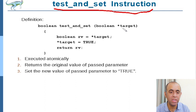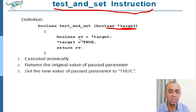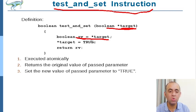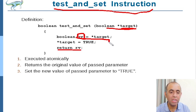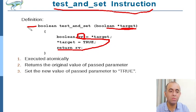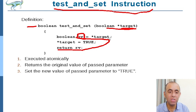The test-and-set instruction receives a variable — in C language we pass the address of the lock. As soon as this function receives the lock, it tests the value: it makes a temporary copy of the previous state of the lock. If the previous state was 0, the temporary value becomes 0; if it was 1, the temporary value becomes 1. The function returns this old value to the calling process, and the new value of the lock is always set to true.